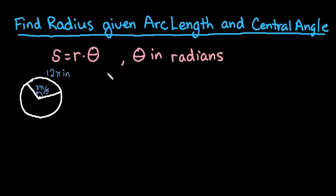There's a couple different ways that you can do this. So in the drawing what we have is that S is equal to 12 pi inches and theta is equal to 3 pi over 5. That's the central angle.